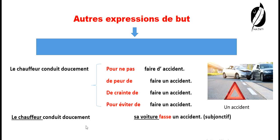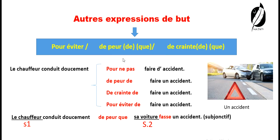Le chauffeur conduit doucement. Sujet un : le chauffeur. Sujet deux : sa voiture. « Que sa voiture fasse un accident. » Ici, la voiture, et là, le chauffeur. On a deux sujets différents. Alors, on utilise « de peur que ». De peur de → de peur que. Et la remarque, c'est le subjonctif : « De peur que sa voiture fasse un accident. » « Fasse » est le verbe faire au mode subjonctif. On peut utiliser « pour éviter », « de peur de » ou « de peur que ». « De » quand il y a le même sujet. « Que » quand on a deux sujets différents.